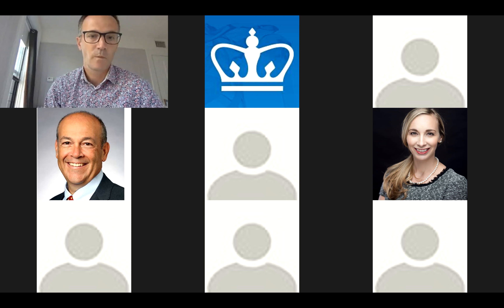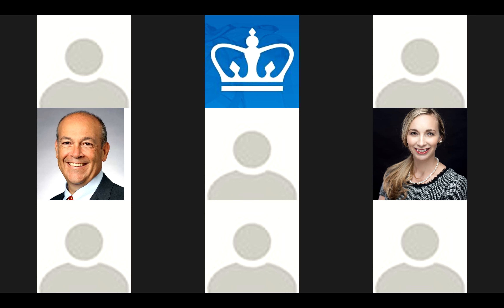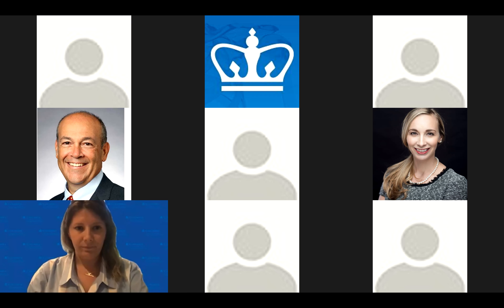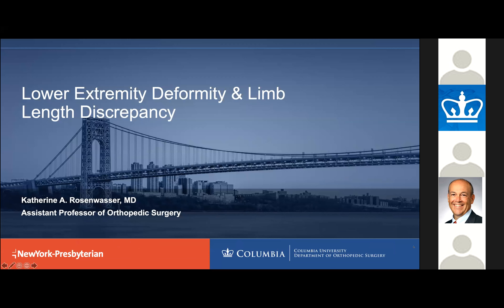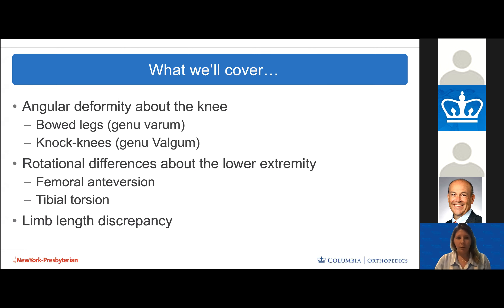Our next speaker is Dr. Katie Rosenwasser, my co-director for the course. She trained at Columbia for her orthopedic residency, then did a pediatric orthopedics fellowship at Hospital for Sick Children, followed by an additional fellowship in limb deformity reconstruction. She will be discussing angular deformities, torsional differences, and limb length differences in young children — including genu varum, genu valgum, femoral anteversion, and internal tibial torsion.